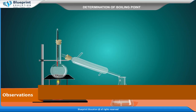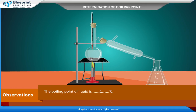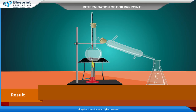Observations: The boiling point of the liquid is x degrees Celsius. Result: The boiling point of the given organic compound is x degrees Celsius.